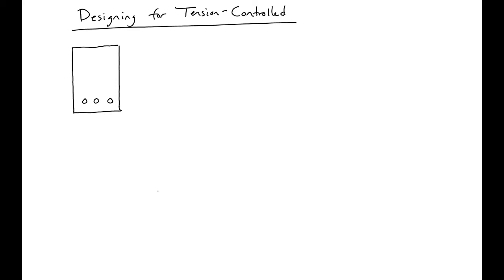As we've seen, we want to design our section to be tension controlled so that we can take advantage of a higher phi factor because of our increased ductility when we have a tension controlled section.